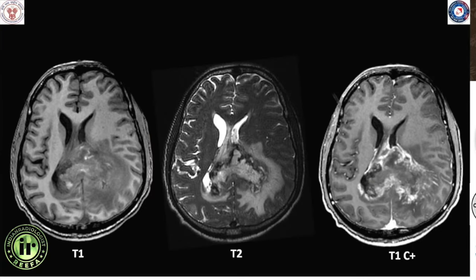On MRI in the same patient, T1-weighted images show T1 hyper-intensities because of hemorrhage within the tumour, with extensive necrotic areas, peripheral hemosiderin staining, and peripheral irregular thick rind of enhancement crossing the midline — giving rise to the butterfly glioma appearance. This is an IDH wild-type glioblastoma, a grade 4 neoplasm.